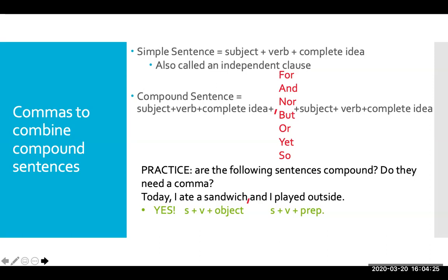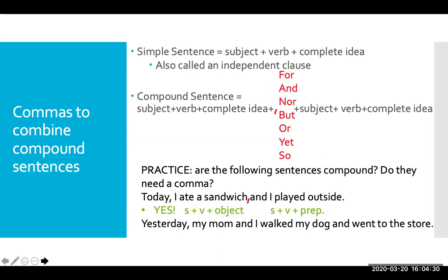Let's look at another one. 'Yesterday, my mom and I walked my dog and went to the store.' Does this one have two independent clauses? Does it need a comma? No. In this one, I have a subject — 'my mom and I' — and a verb 'walked,' and an object 'my dog.' So I do have one complete independent clause. On the other side of the coordinating conjunction, I have 'went to the store.' There is no subject there — it is not an independent clause, so I do not need a comma here.